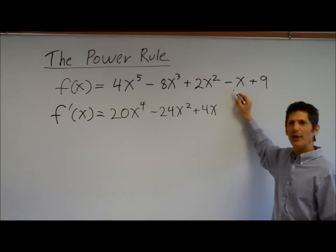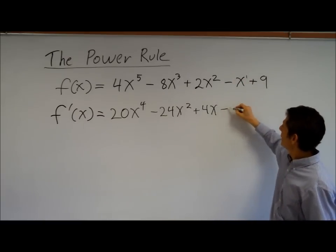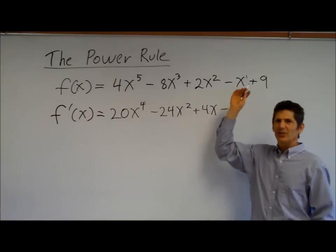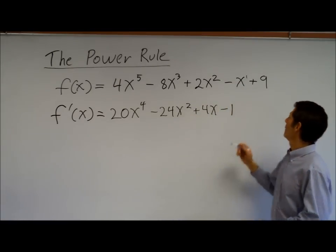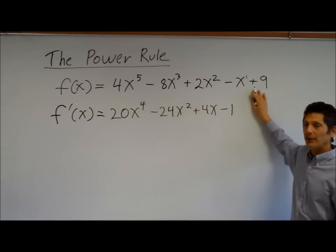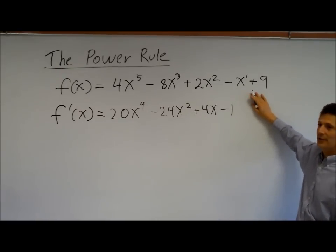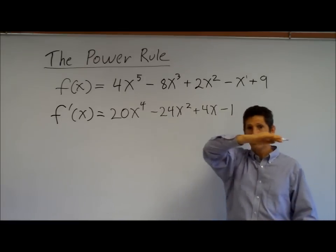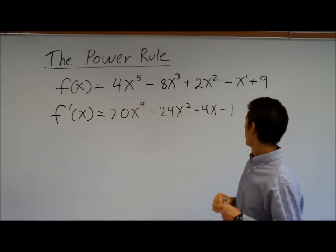Oh, this one's a little bit funny. There's really a 1 here already. So when I multiply, I end up with negative 1, x to the 0. No x's, really. It's just negative 1. And a constant all by itself is just 0. The derivative of a constant is 0. And actually, it makes sense. If I were to graph the line y equals 9, it's just a flat line. It has a slope of 0, of course. So there you have it.